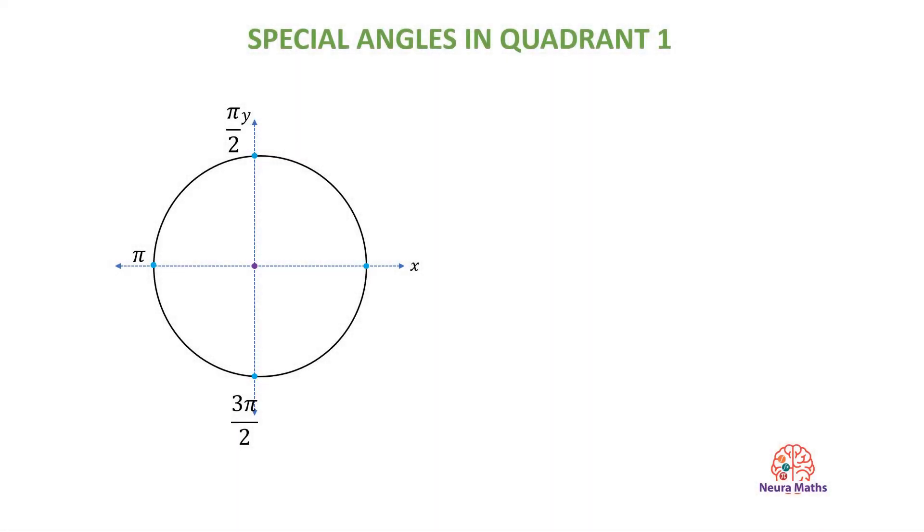Previously, we studied special angles in quadrant 1. What is the sine of angle 30? The sine of angle 30 is half.